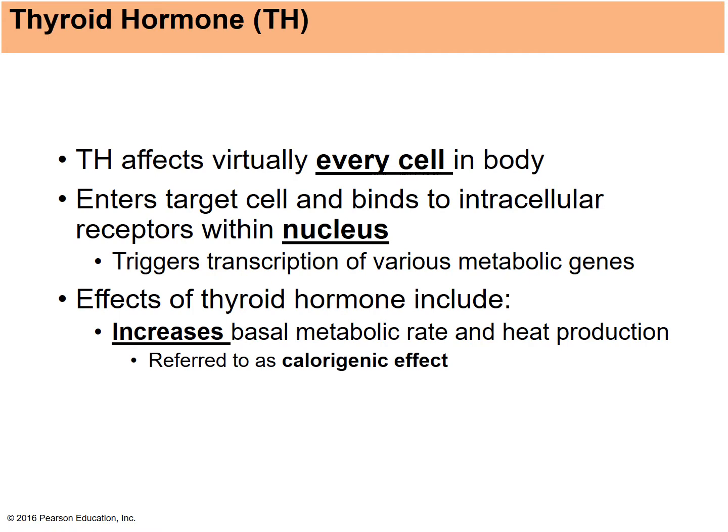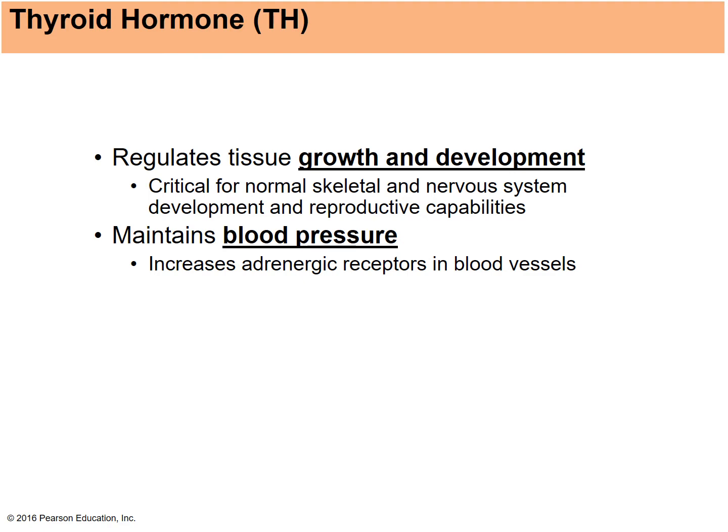Thyroid hormone affects almost every cell in the body — essentially all cells are target cells with receptors that bind it. The hormone binds to the cell, enters, and then binds with the nucleus. It helps increase the metabolic rate, which in turn increases heat production, since heat is a side effect of metabolic activity. It also helps control growth and development and helps maintain blood pressure.